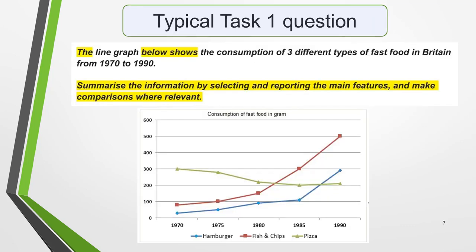Here's a typical question. The highlighted words are always the same no matter what type of question you get. The line graph below shows the consumption of three different types of fast food in Britain from 1970 to 1990. Summarise the information by selecting and reporting the main features and make comparisons where relevant. With the format of the question always the same, this means that you can use the same basic method and essay structure to write any essay for IELTS Academic Writing Task 1.